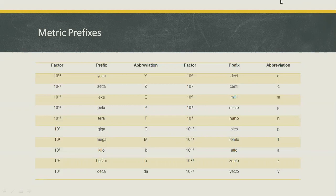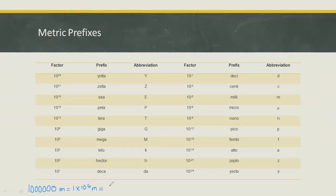For example, you have 1,000,000 meters, which is equivalent to 1 × 10^6 meters. We can express this using megameter, which equals 1 megameter.